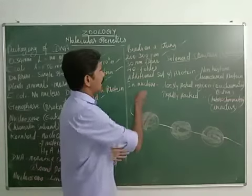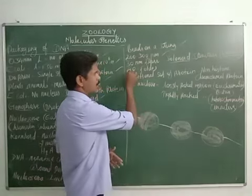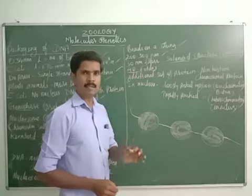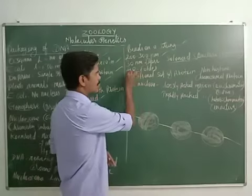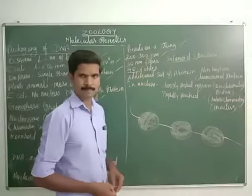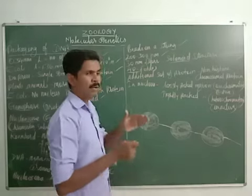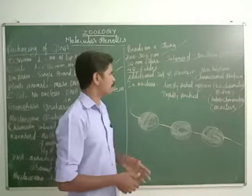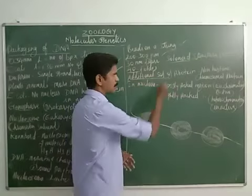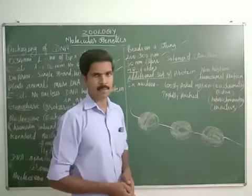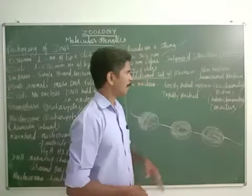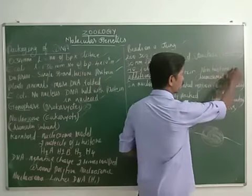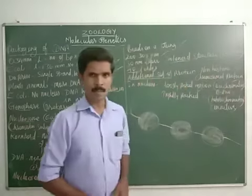The DNA molecule consists of 40 foldings. To keep or to pack all the chromatin fibers, the DNA molecules need an additional set of proteins. That additional set of proteins are called non-histone chromosomal proteins.